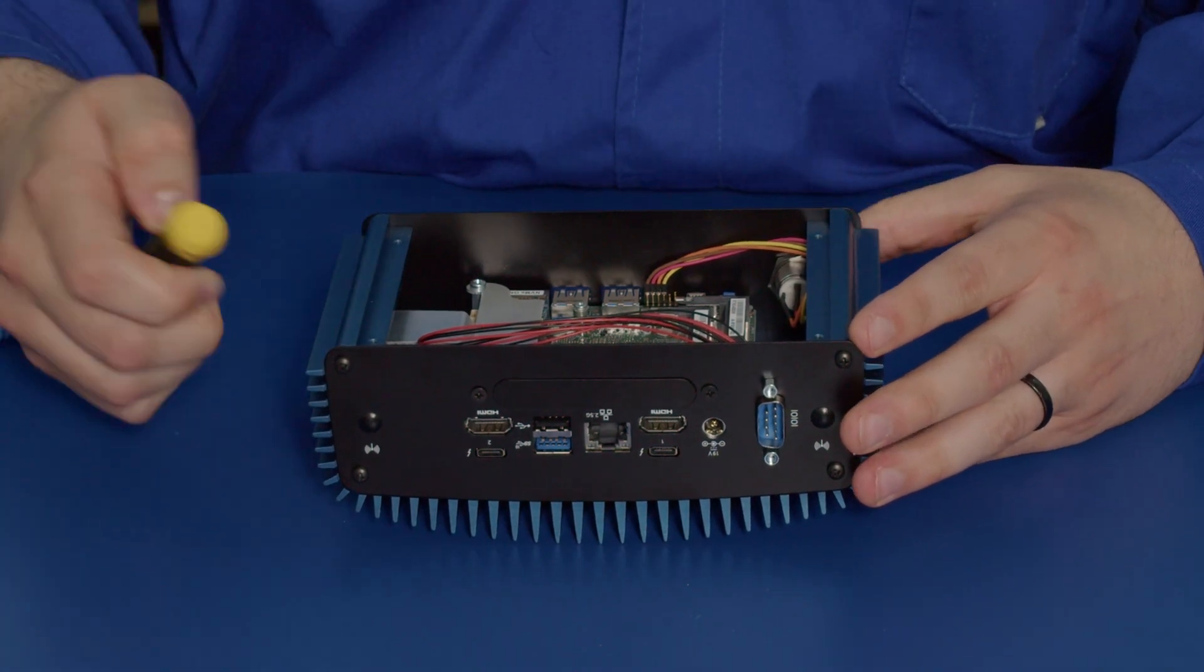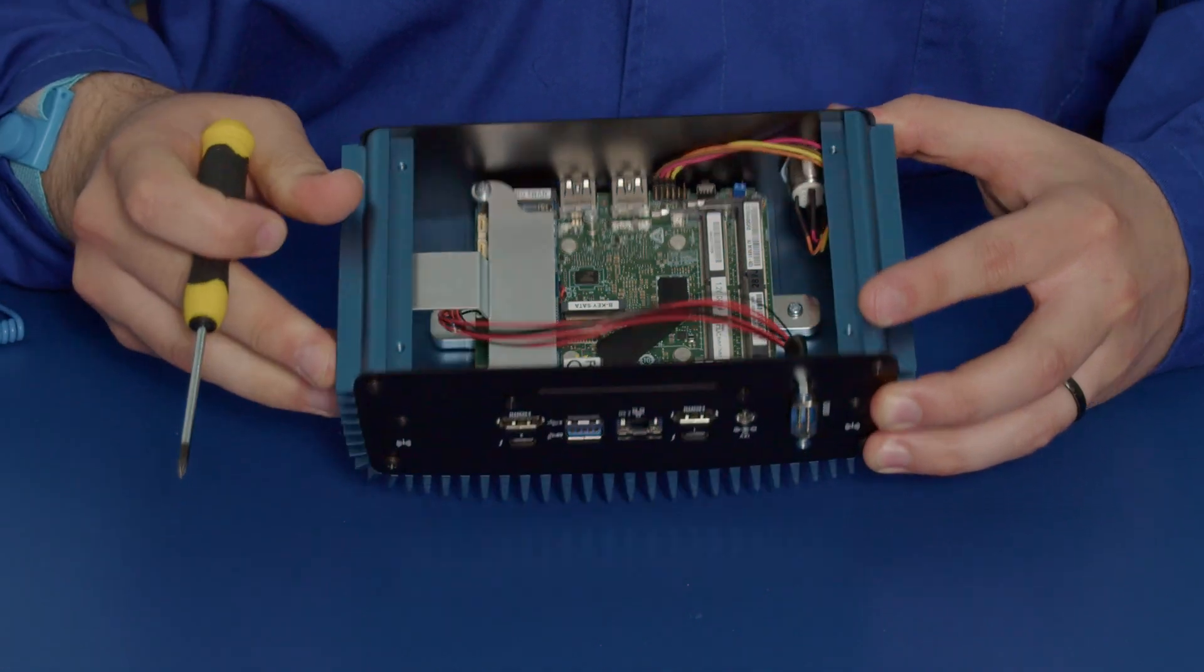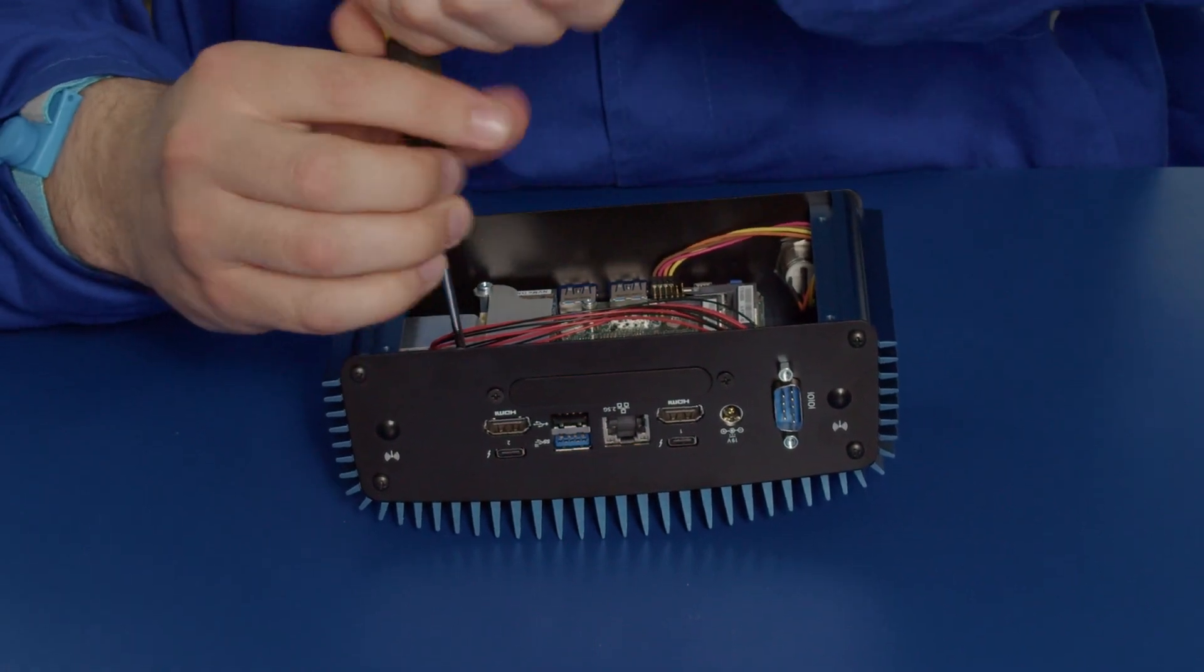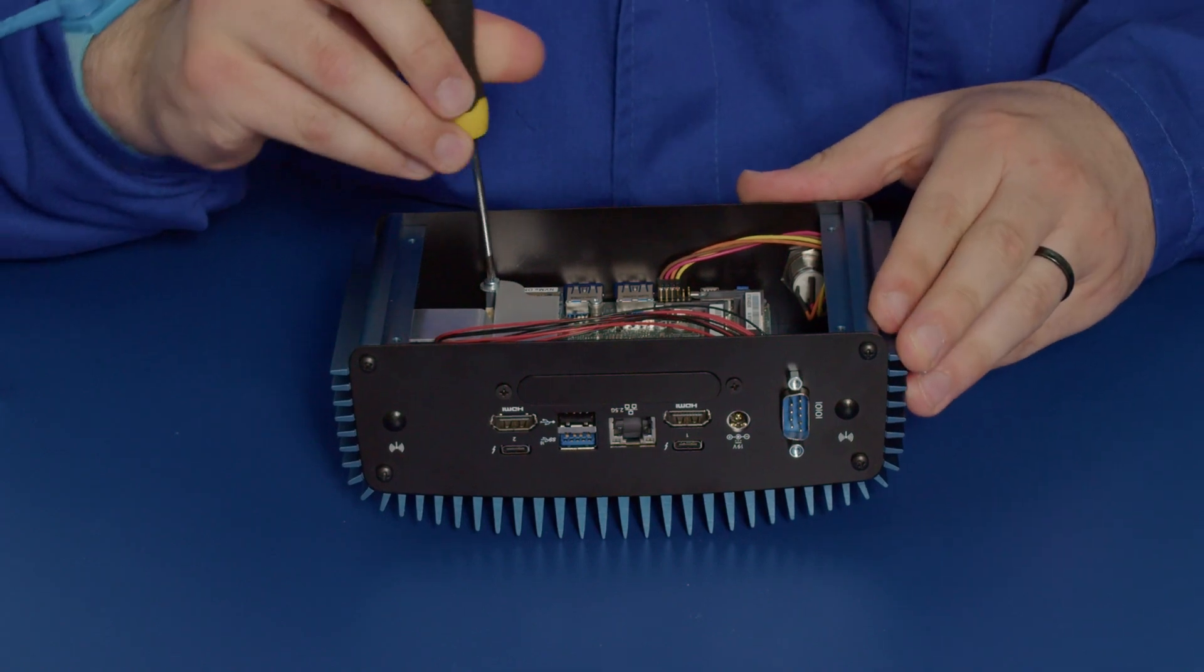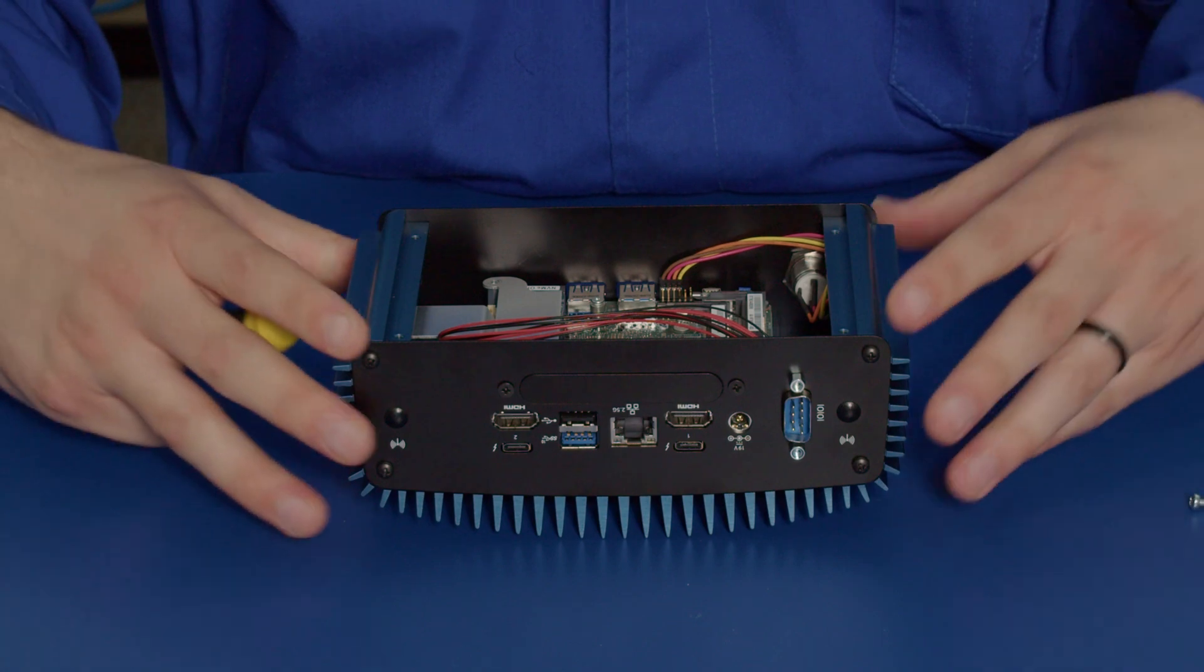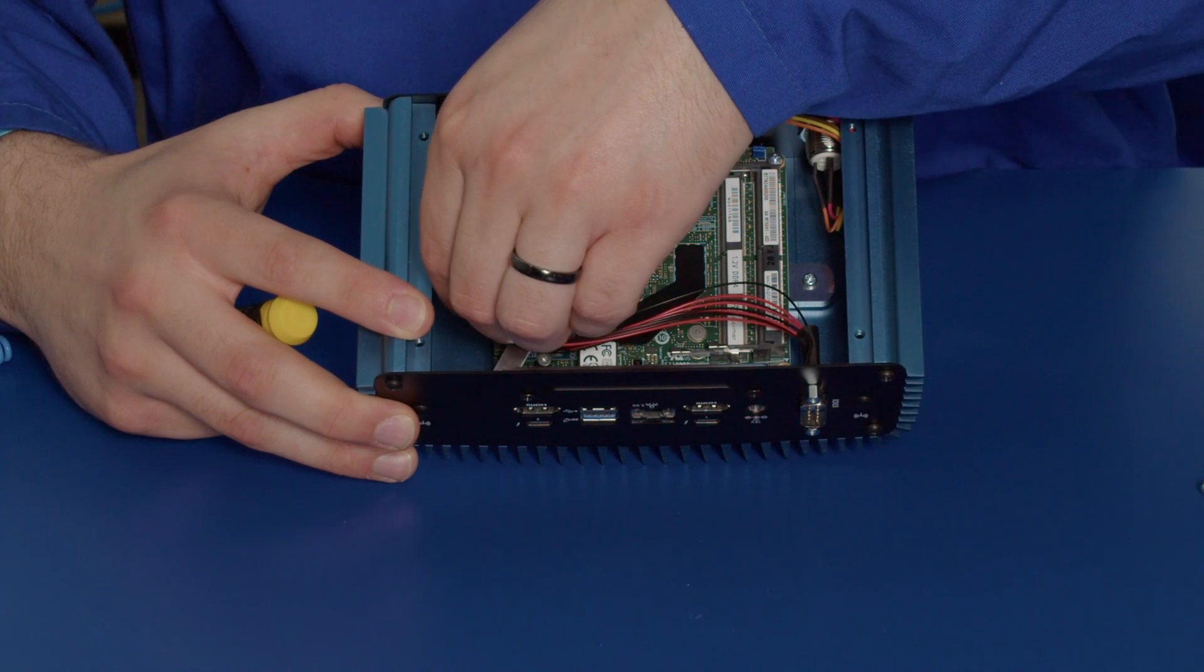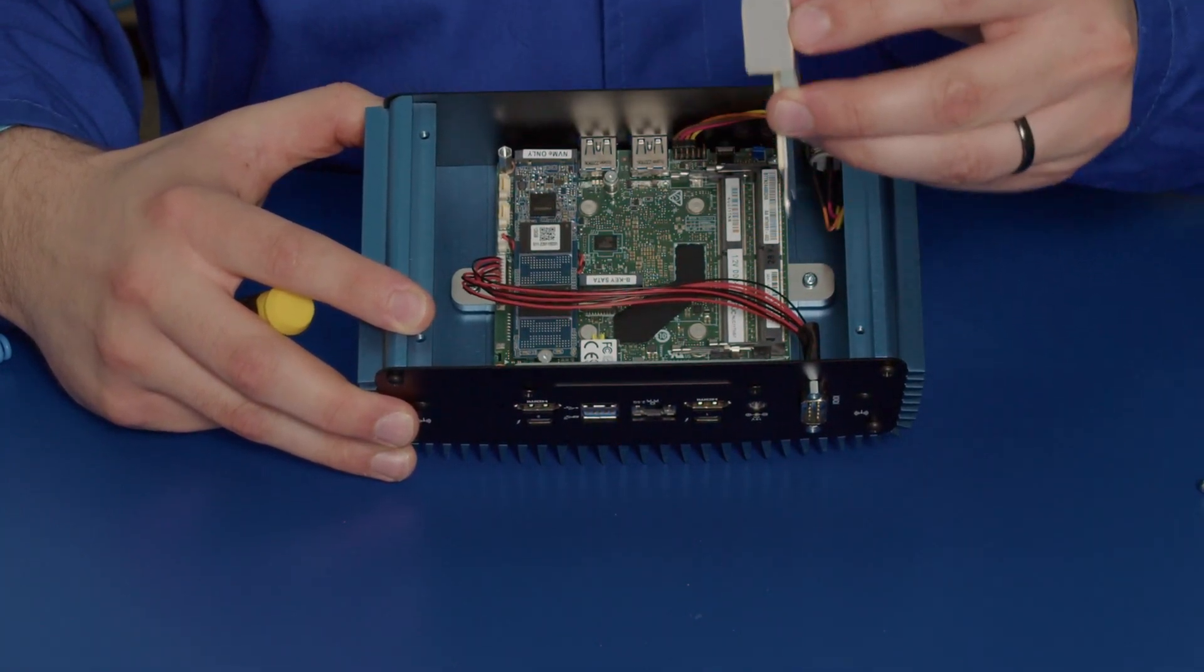To take out the SSD you need to unscrew the two screws on the SSD heatsink. So the SSD heatsink is unscrewed now and you can take it out. Just be careful of the thermal pads as they are very easy to fall off.